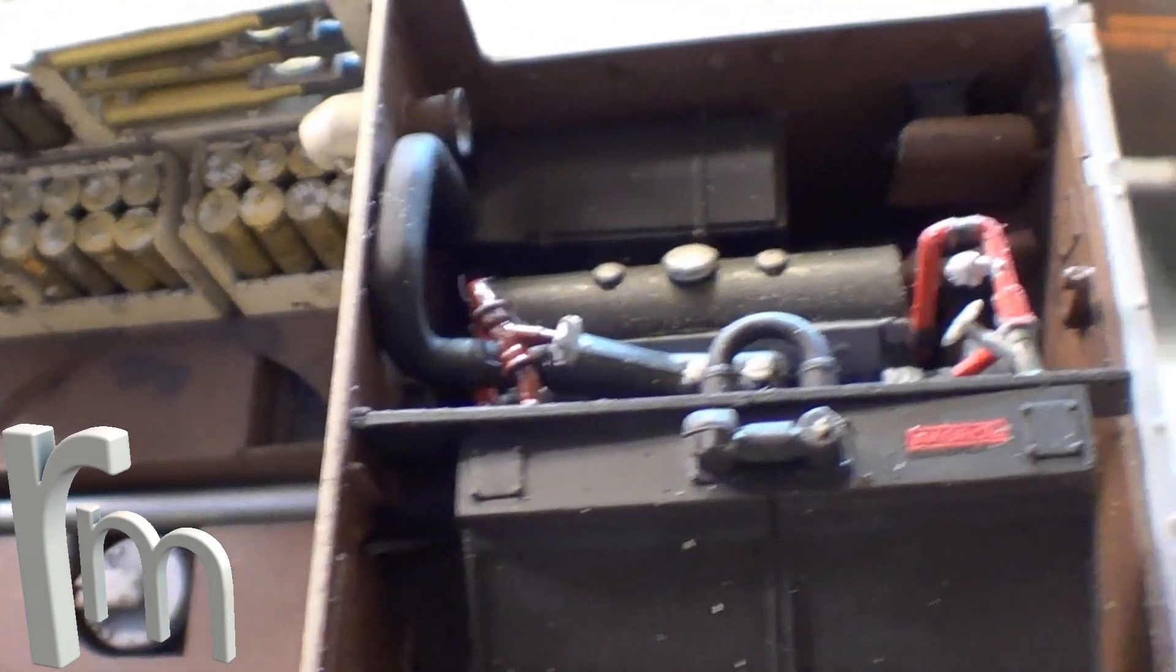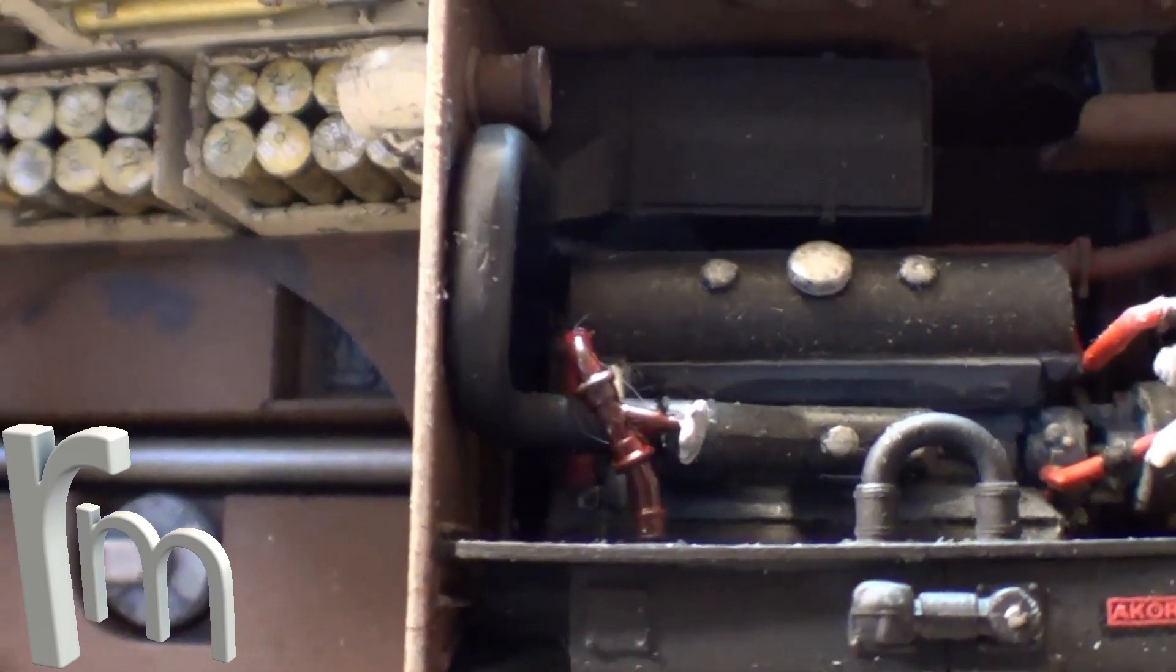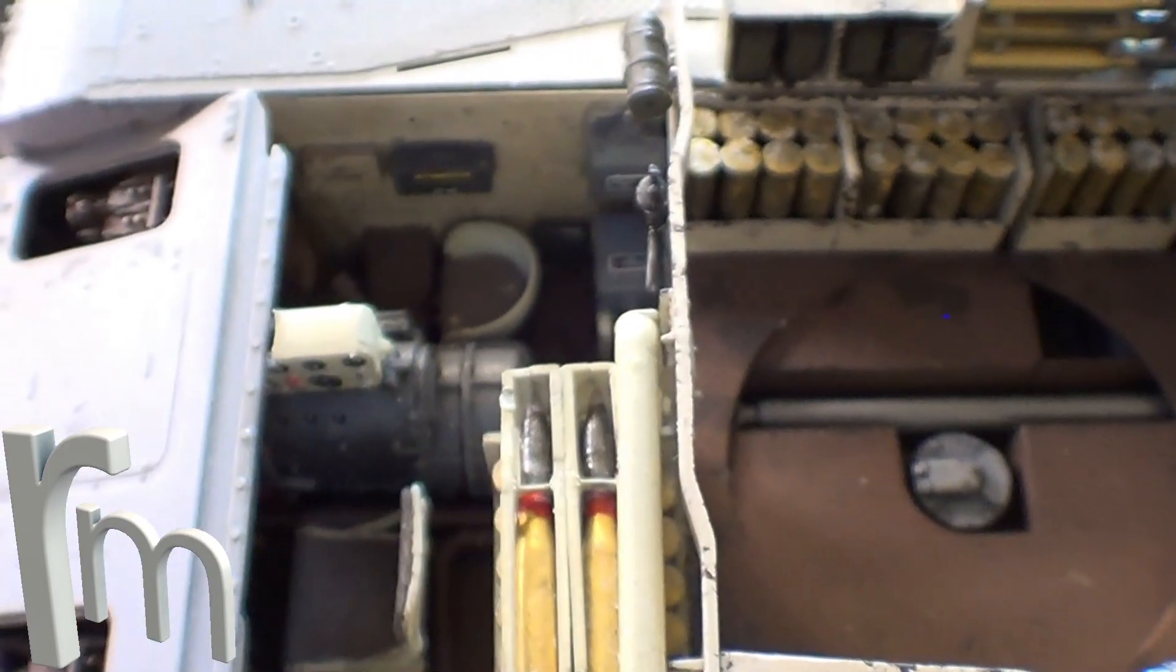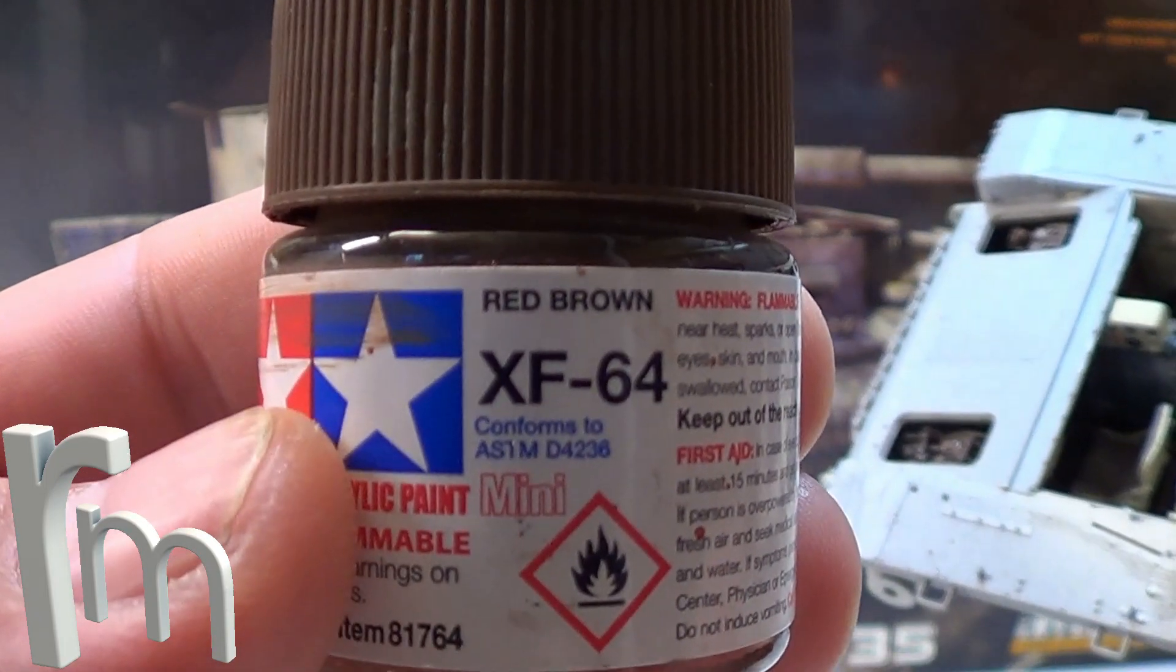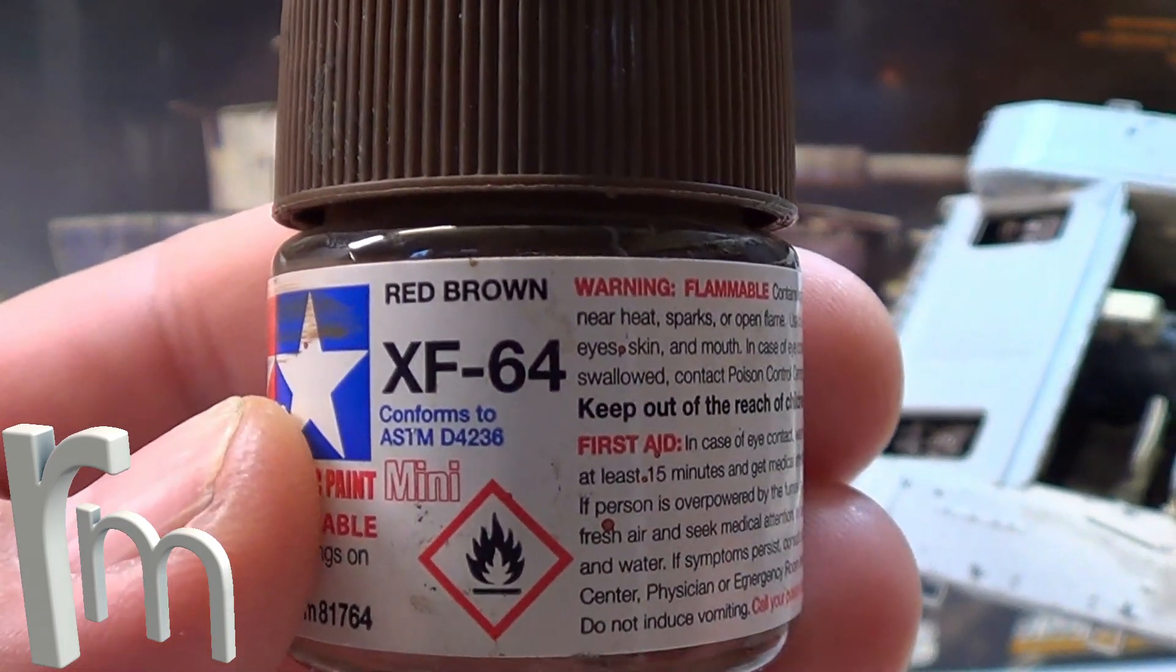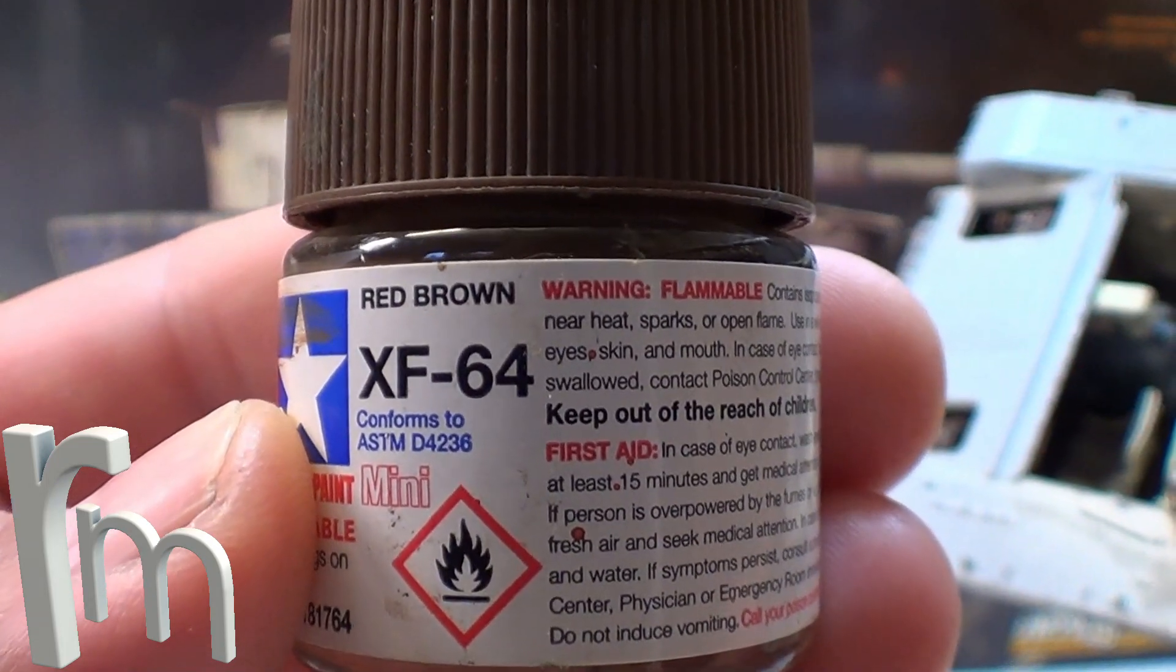And there's some in here as well. Really, it's really livened it up. And then I just had to repaint these brown bits here because the brown I had was a slight different color to what John used. And I used red-brown Tamiya XF64.